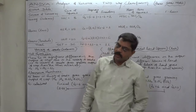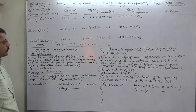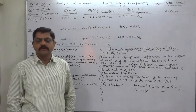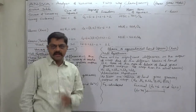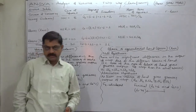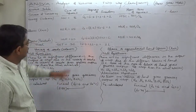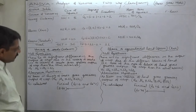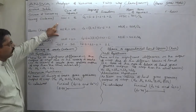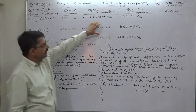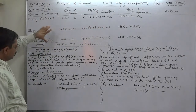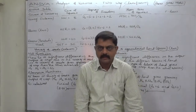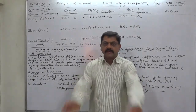Hello, namaskar and welcome to ANOVA two-way classification, second case, part two of the solution. In the first part we discussed the interpretation of the question, because the examiner framed it in a very unique style, and then we calculated SSC, SSR, and SSE with the help of SST. In this part two we are going to discuss the ANOVA table and the whole process of hypothesis testing.